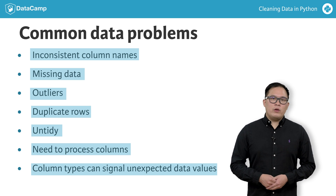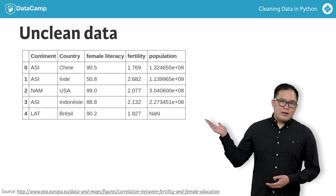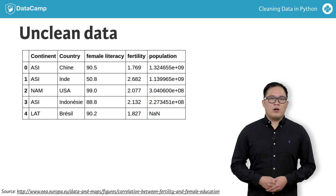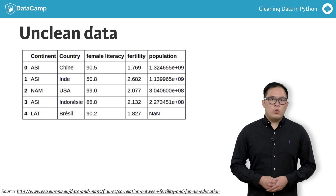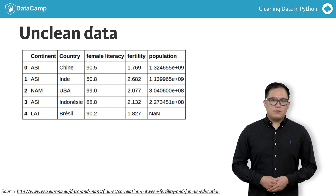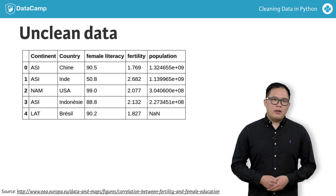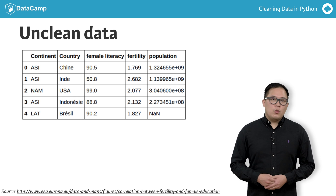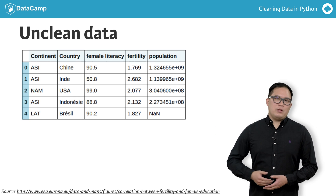We'll go into more detail on what these mean throughout the course. This is a data set adapted from the European Environment Agency. It gives the percent of females age 15 or over who can read and write, the average number of children that a woman will give birth to, and population for a given country and continent. We have row indexes and column names.